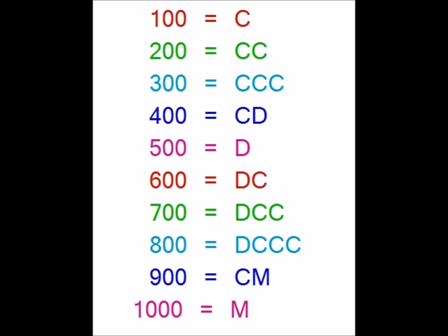For 100 we have the basic symbol C. For constructing 200, which contains two hundreds, we need to repeat the symbol C — so CC indicates 200. Likewise, for 300 which contains three hundreds, we repeat C three times — CCC indicates 300.